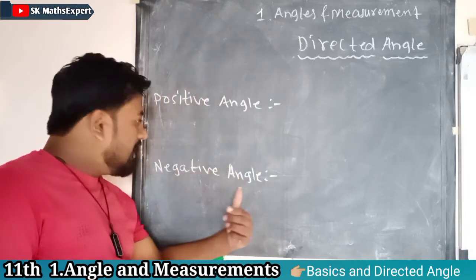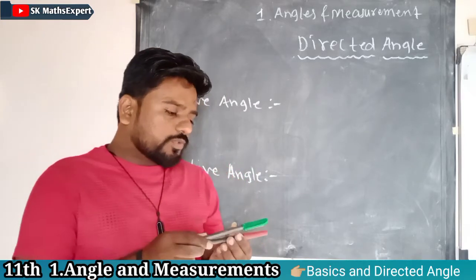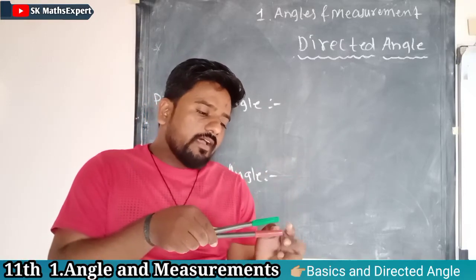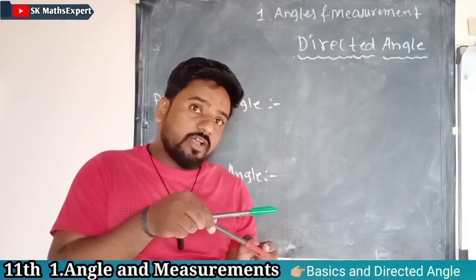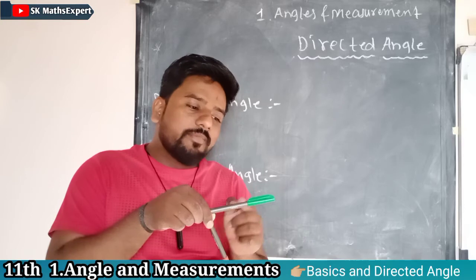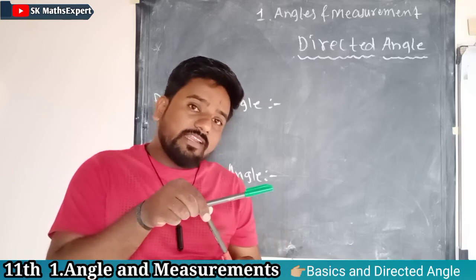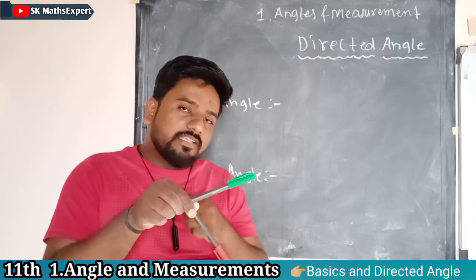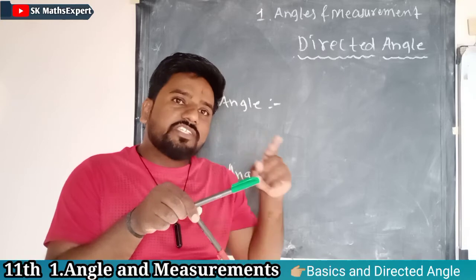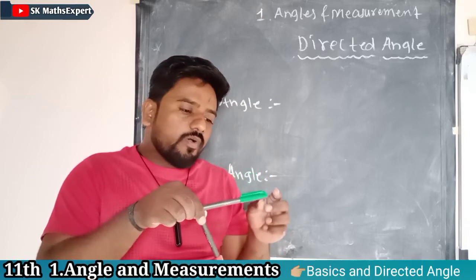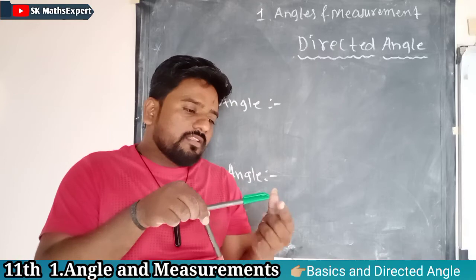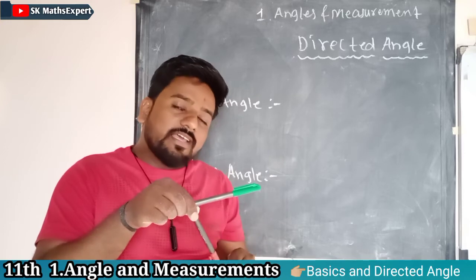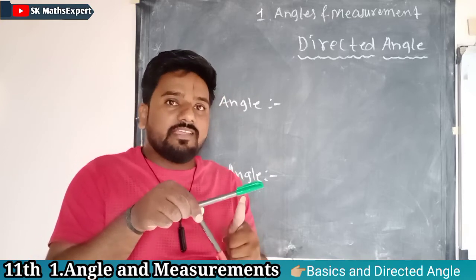Now let's see the negative angle. In a similar manner, this is the green ray and this is the red ray. If we rotate the red ray in a downward direction — that is, in the clockwise direction — you will get some angle between the green ray and the red ray. This angle must be negative because the direction is clockwise. In this concept, the green ray is called the initial ray because it is not rotated, and this rotated red ray is called the terminal ray.